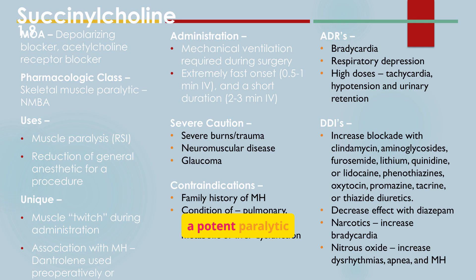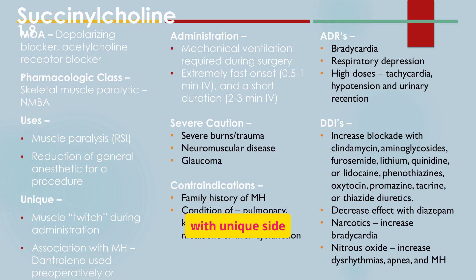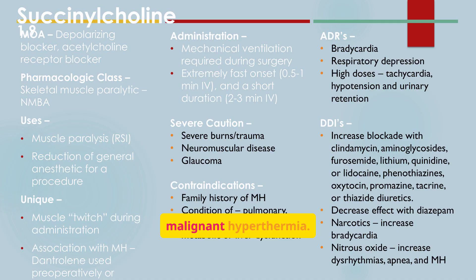Succinylcholine is a potent paralytic used in RSI. It has a rapid onset and short duration, but is associated with unique side effects like muscle twitching and the potential for malignant hyperthermia.